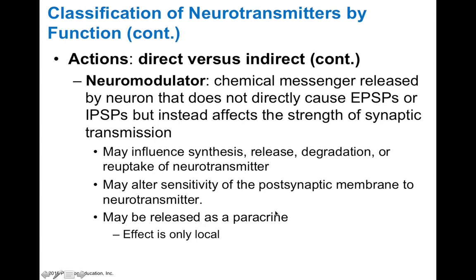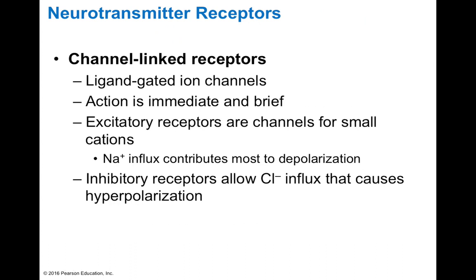Neuromodulators can be released as a paracrine, so their effect is usually only local — typically released just for a local area of synapses. In terms of types of receptors, we have channel-linked receptors, which are ligand-gated ion channels. Their action is immediate and brief, and they can be excitatory or inhibitory. Channel-linked receptors are excitatory if they gate sodium, so sodium influx causes depolarization. They can be inhibitory if they gate chloride or potassium, because chloride influx or potassium efflux would cause hyperpolarization.